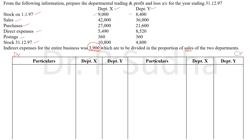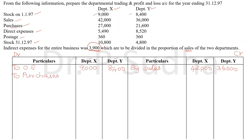Now we start with the question. The first item is opening stock, recorded on the debit side. For department X it is 9,000; for department Y it is 8,400. Next, sales are recorded on the credit side: for X it is 42,000; for Y it is 36,000. Then purchases are recorded on the debit side: for department X it is 27,000; for department Y it is 21,600.